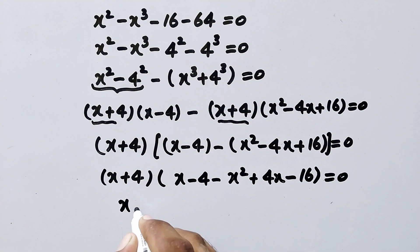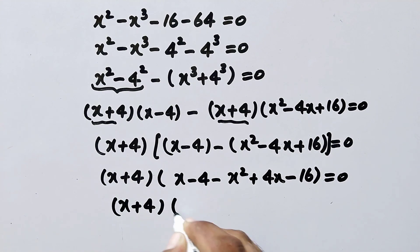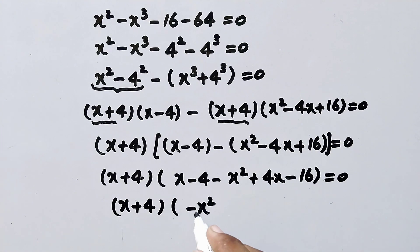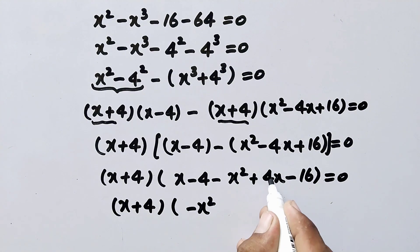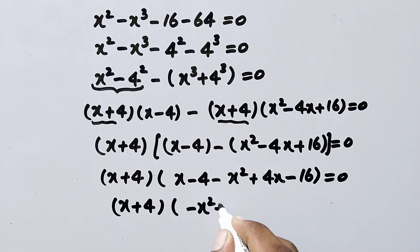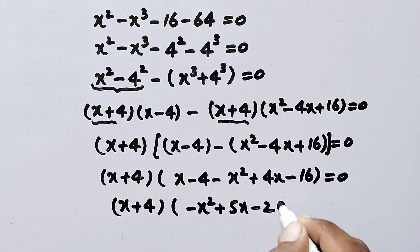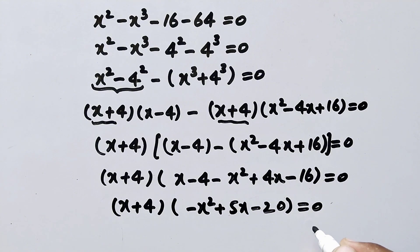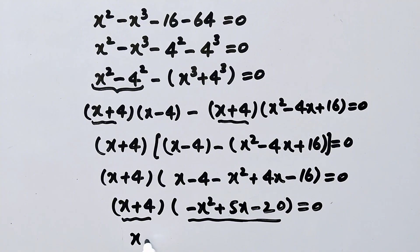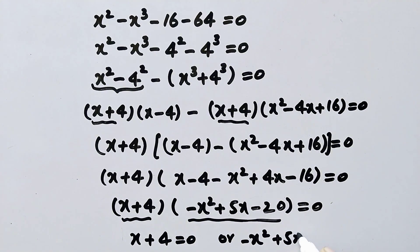By rearranging the expression inside the bracket: x minus 4 minus x squared plus 4x gives minus x squared plus 5x, and minus 4 minus 16 is equal to minus 20, equal to zero. Now we have gotten two factors equal to zero: x plus 4 equal to zero, or minus x squared plus 5x minus 20 equal to zero.